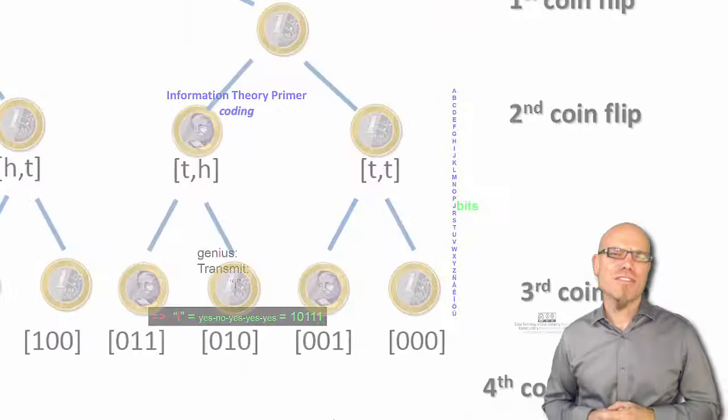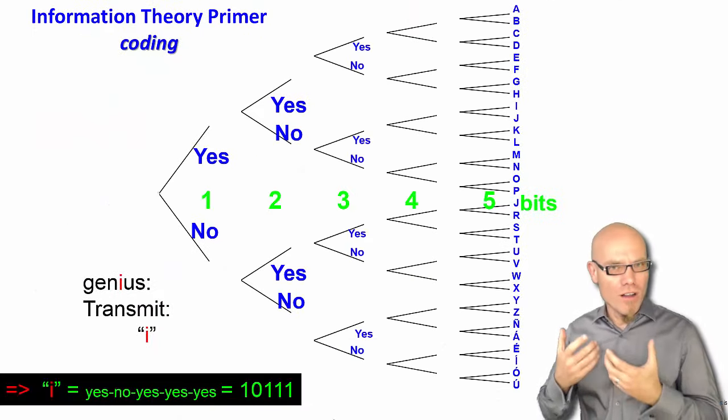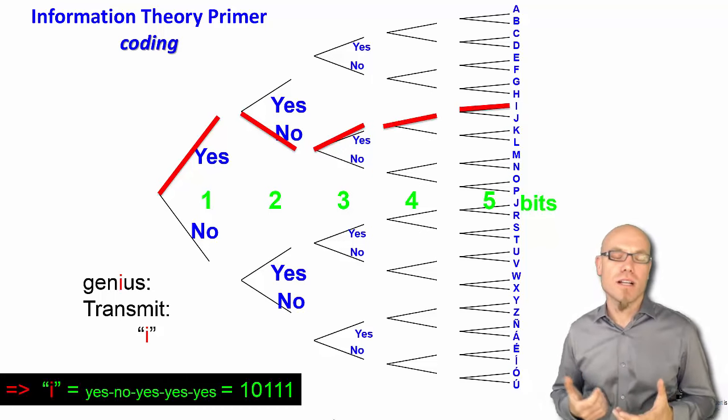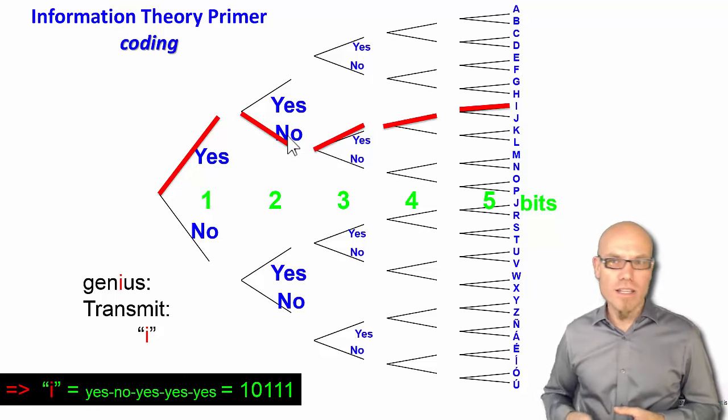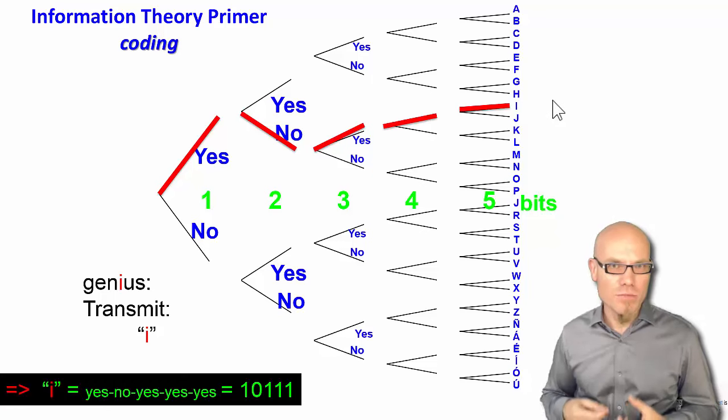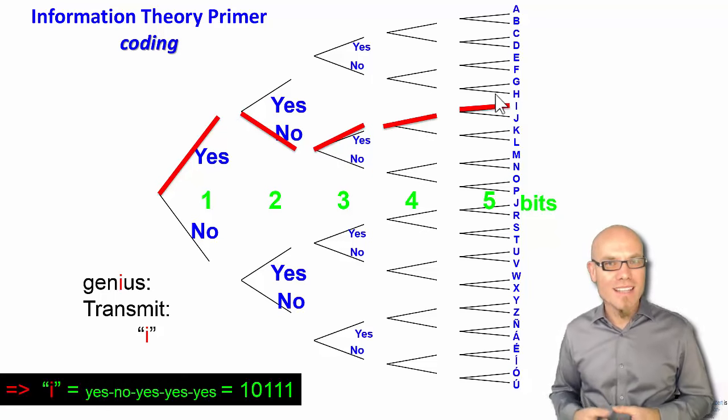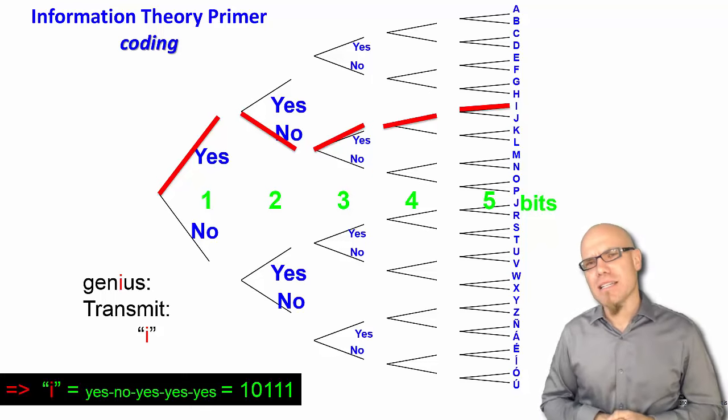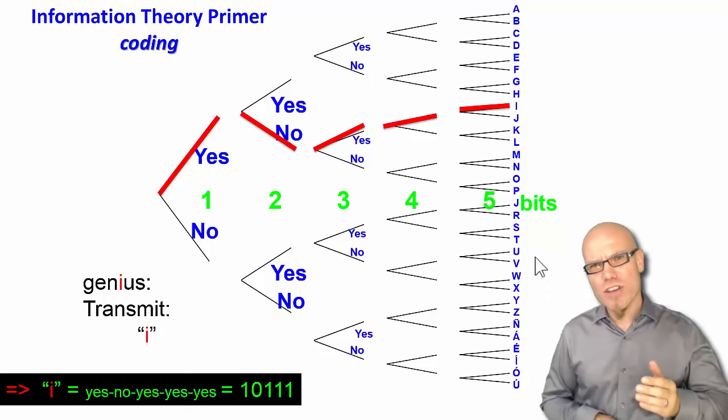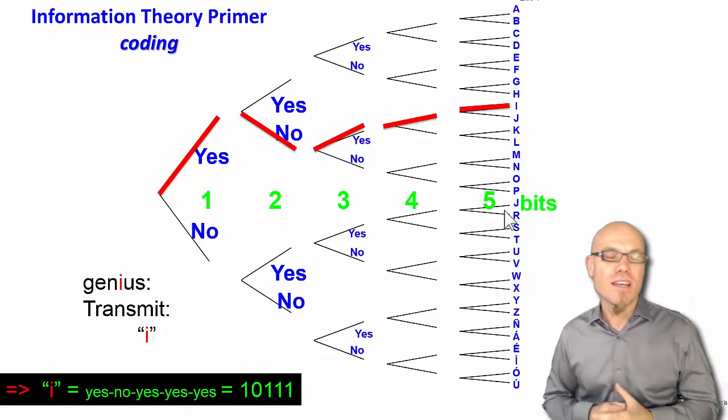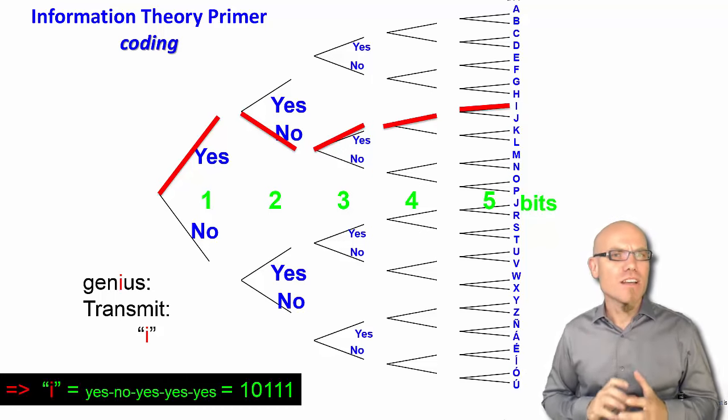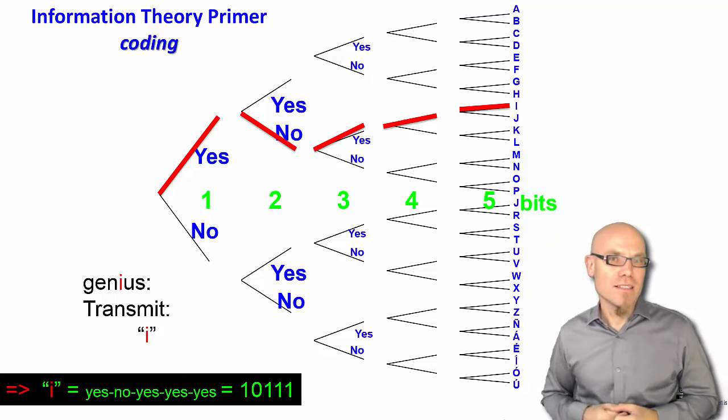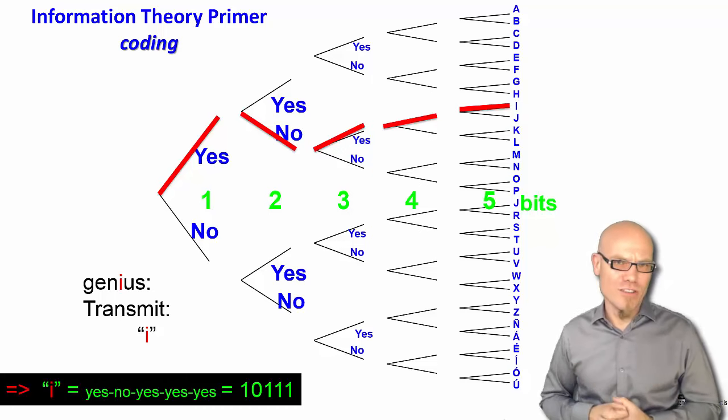Let's do that again. We want to transmit the letter I. If all the letters are uniformly distributed, we have to reduce the possibility space by half five times and the resulting code would be 10111. The question would be, is it in the first half? Yes, no, yes, yes, yes. This gives us five bits. Now in reality, this probability space of all letters is not uniformly distributed. Some letters are much more common than others. That actually means you have less uncertainty because it's more likely that the letter E is communicated than the letter X.